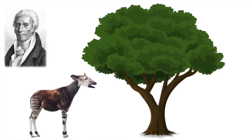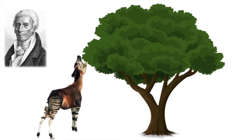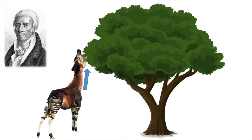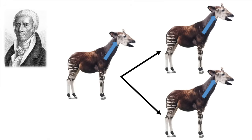This example describes Lamarck's theory of evolution by acquired characteristics. The okapi couldn't reach the trees, so it would just stretch its neck to reach them, and it would then have a longer neck. This would be an acquired characteristic — one which they acquired. Lamarck would have suggested that the okapi would then pass on this acquired characteristic to its offspring, not a genetic one.